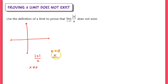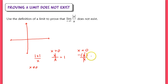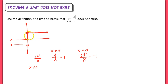When x is positive, x divided by x equals 1. When x is negative, the absolute value takes the opposite, giving negative x over x, which simplifies to negative 1. So the graph is a horizontal line at y equals 1 for positive values and a horizontal line at y equals negative 1 for negative values. As x approaches 0, the limit clearly does not exist because we approach two different y outputs.